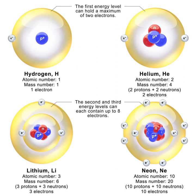Outside the nucleus, free neutrons are unstable and have a mean lifetime of 881.5 ± 1.5 s; therefore the half-life for this process is 611.0 ± 1.0 s, about 10 minutes 11 seconds. Beta decay of the neutron can be denoted by the radioactive decay: n⁰ → p⁺ + e⁻ + ν̄_e, where p⁺, e⁻, and ν̄_e denote the proton, electron, and electron antineutrino respectively.